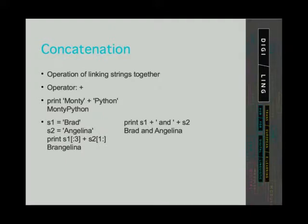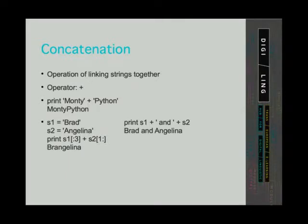Concatenation can also be done on part of a string. You already know how to do slicing. In the second example on the left we have two strings. String number one is Brad and string number two is Angelina. If we wanted to create a portmanteau word out of those two strings, we can take for example the first three characters from Brad and all the characters from Angelina except the first one. If we concatenate the sliced first string and the sliced second string, the program returns Brangelina.